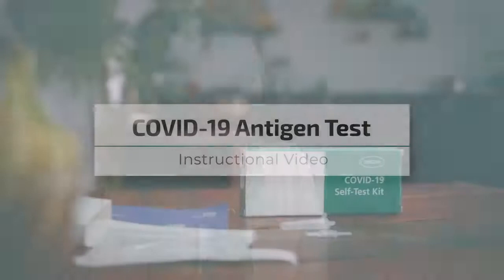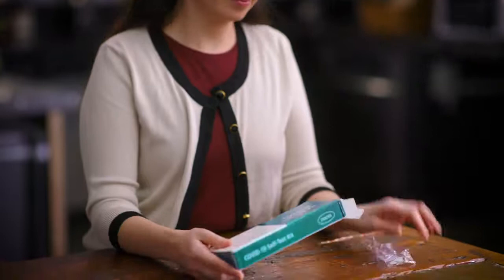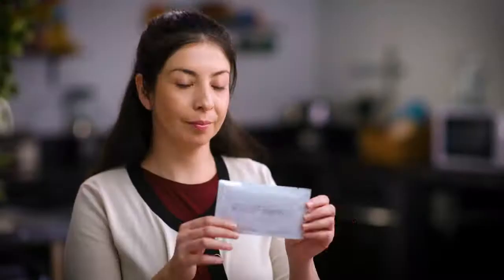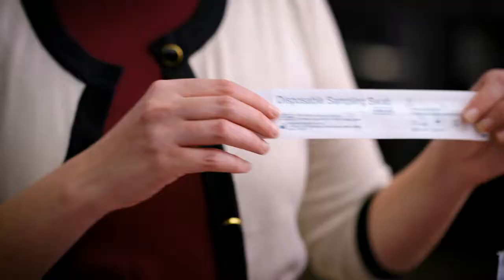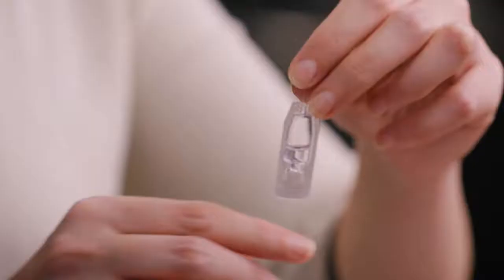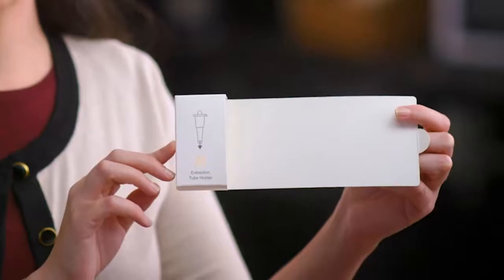Before administering the test, familiarize yourself with the components of the test. Each kit will include instructions, a test cartridge, a collection swab, an extraction tube, a screw cap collector, extraction solution, and the extraction tube holder. Make sure that all of the items are there.